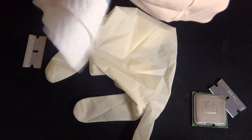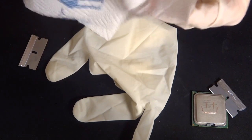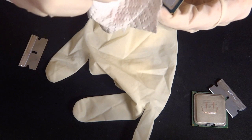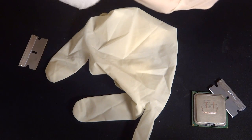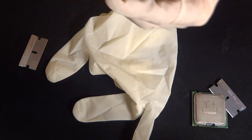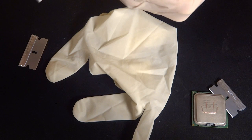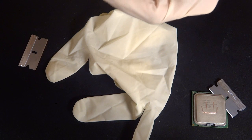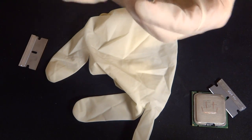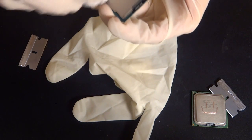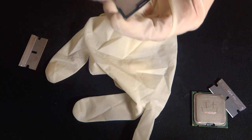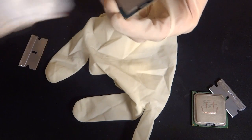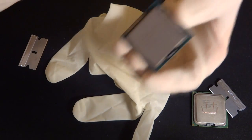I have to tell you there are certain warnings of delidding. First of all there's obviously static—you might transfer static to your CPU and render it completely useless. You're putting a razor blade in between the IHS, the metal bit, and the PCB, the green bit, and therefore you could easily scratch the PCB. You could also damage the die, which is the actual main membrane of the CPU. You could also chip your CPU and therefore have problems fitting it. So those are the warnings.